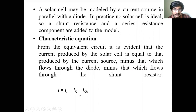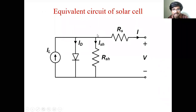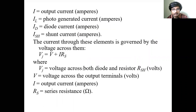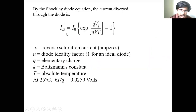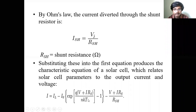The load current is IL minus ID minus ISH. This is the characteristic equation. The diode current equation expression is: ID = I0 × (e^(q·Vj / nkT) − 1), and ISH = Vj / RSH. The total output current is IL − I0 × (e^(q(V + I·RS) / nkT) − 1) − (V + I·RS) / RSH.